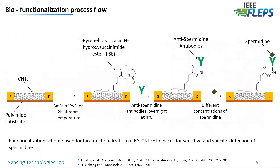After device characterization, we proceeded with the bio-functionalization of the device. In order to achieve specific detection towards spermidine, our devices were functionalized with anti-spermidine antibodies. To have a controlled amount of antibodies immobilized in the carbon nanotube channel, we used a PASE linker molecule. This molecule contains two different functional groups: the benzene rings that attach to the nanotubes via strong π–π interaction, while the other NHS ester group remains free to bond with the NH₂ group of the antibodies.